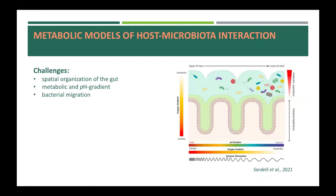Combining host and bacterial metabolic models can be challenging due to spatial organization. For example, the gut is spatially organized with gut cells surrounding the microbiota. Accordingly, the gut microbiota metabolites are most concentrated in the lumen and will be available first to the microbiota rather than to the host cells. When we simulate the interactions between the gut microbiota and the host, metabolic networks should consider these gradients. Similarly, metabolic and pH gradients exist along the intestinal tract, with the composition of the microbiota in the small intestine differing from that in the colon. In addition, bacterial cells migrate from the upper part of the gut to the large intestine to be finally eliminated in the feces.